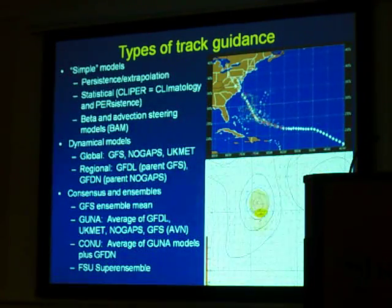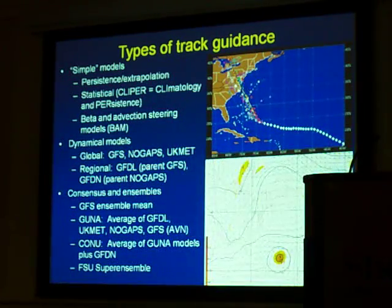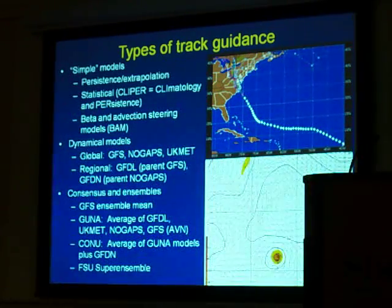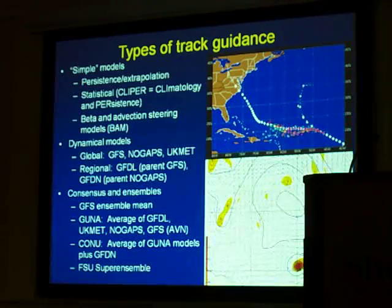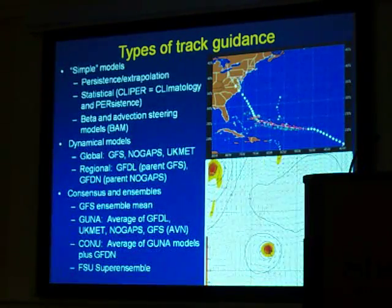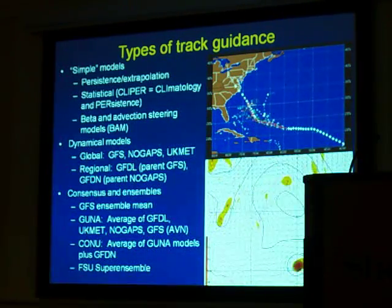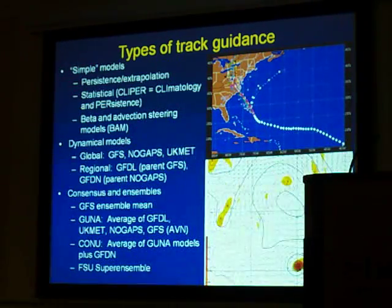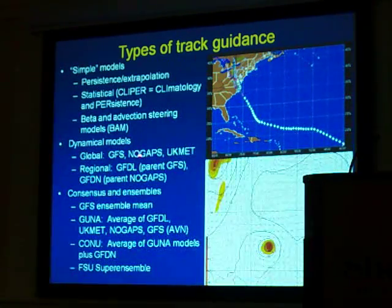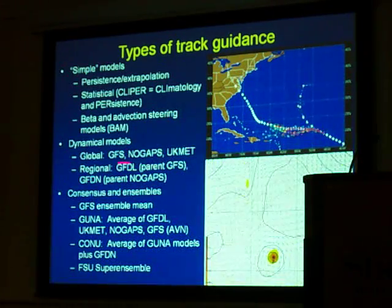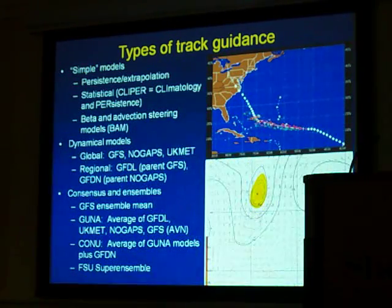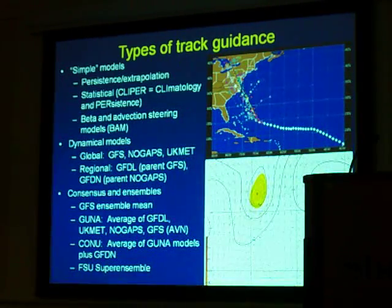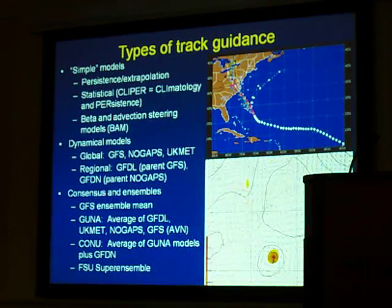The beta and advection models — the BAM models — are very simple barotropic models. They're layer averages: there's a shallow one, a medium one, and a deep one. But the ones we use more often than not are the dynamical models. Many are very familiar: the GFS, the NOGAPS, UKMET, and the more regionalized models. The European model also. And the more regional models centered over the storm: the GFDL and now the HWRF.